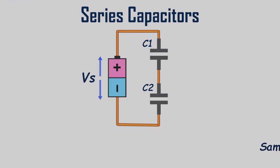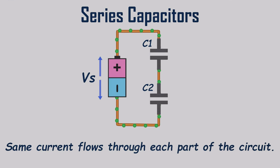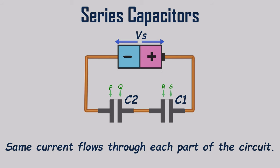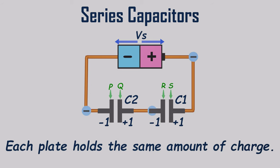In a series capacitive circuit, the same displacement current flows through each part of the circuit. For clarity, let's name the plates as P, Q, R, and S. If one electron moves from the negative side to plate P of C1, one electron has to leave plate Q to plate R of C2. This process continues, where to accumulate one electron on plate R, plate S has to release one of its electrons. These electron movements occur simultaneously; hence each plate always holds the same amount of charge.